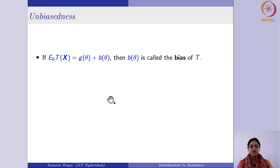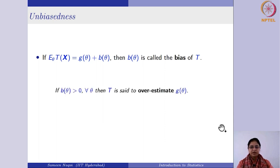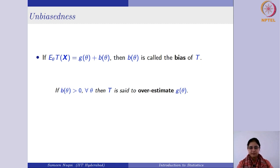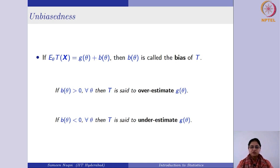We define b(θ) as the bias of this estimator. This b(θ) is a function of the original parameter θ. If b(θ) is greater than 0 for every θ, we say you are overestimating the parametric function g(θ) — you are adding a certain quantity so your expectation exceeds g(θ). Likewise, if b(θ) is less than 0, it means you are subtracting something from g(θ), so you are underestimating the parametric function.